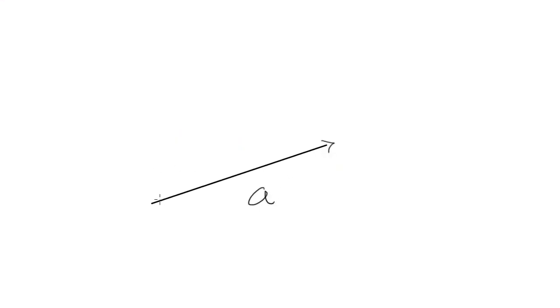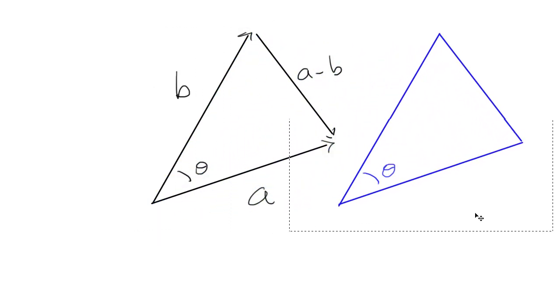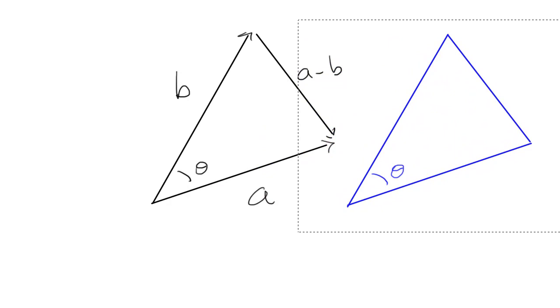So two vectors give you three points, which spans a plane. So I can take this vector figure and overlay a triangle on it, going from point to point. Looking at that triangle, I know the lengths of the sides. It's the length of b, length of a minus b, length of a.